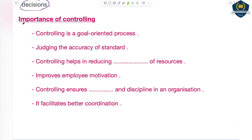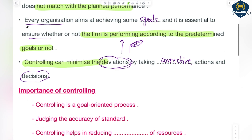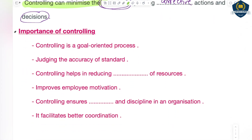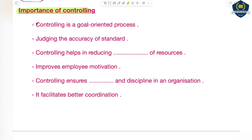Now let's discuss the importance of controlling. I hope the concept of controlling is clear — what controlling actually does. Now see what its importance is. The very first importance is: controlling is a goal-oriented process. Goals and targets are set beforehand, and an organization works to achieve those targets. When a target is achieved, it means you have worked hard and worked the right way — you did not deviate, and you worked according to the planned action. This is the job of controlling — it always leads you in the right direction.